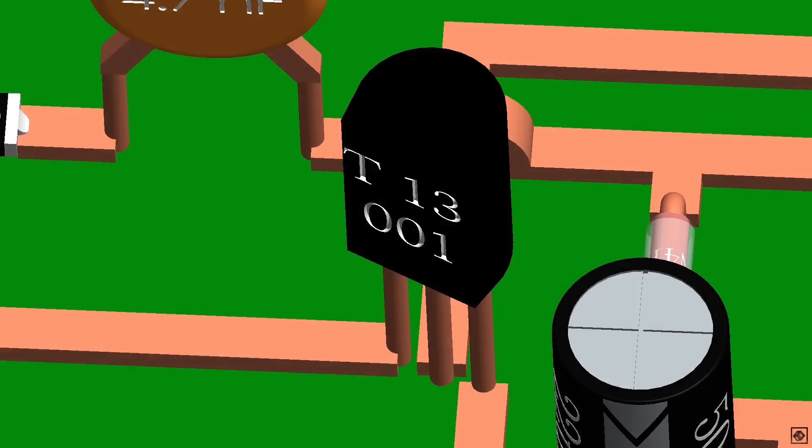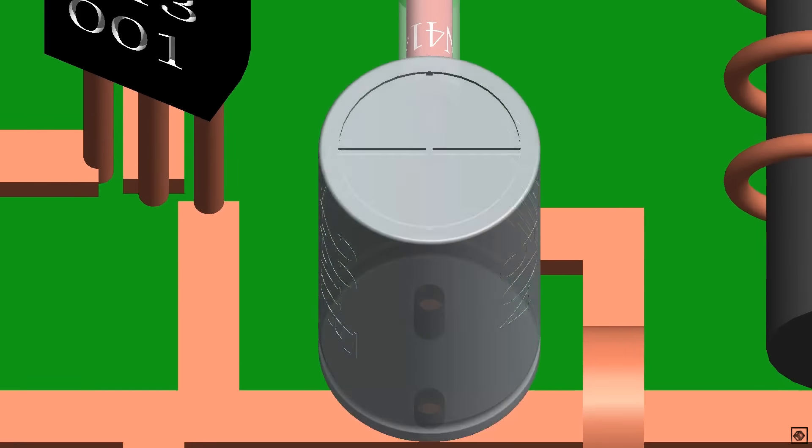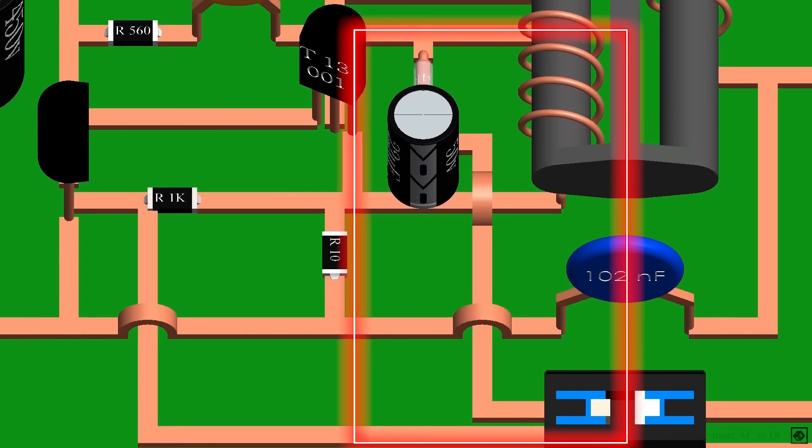And this is transistor 13001. This is its pin configuration. This is a diode. It looks like a zener diode, but it's a fast switching diode 1N4148, and a capacitor of 50 volts 22 microfarad. This is an AC to DC converter for the phototransistor in the optocoupler. It forms a circuit like this.